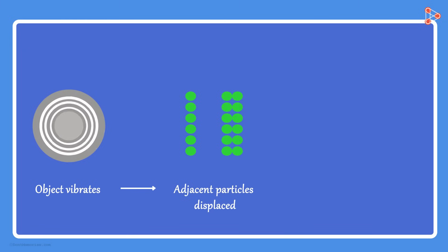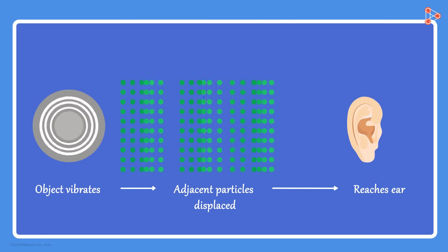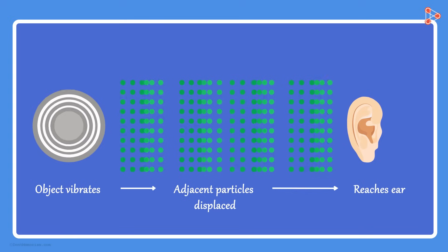They in turn do the same to their neighboring particles. This process continues in the medium till the sound reaches our ear. We see that we create some disturbance flowing through the medium. This is the way that sound travels through the medium.